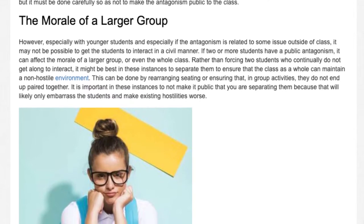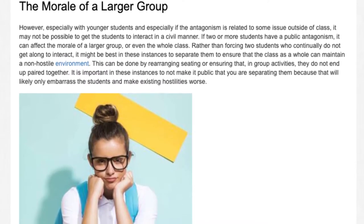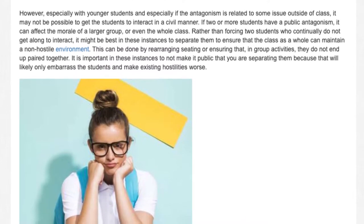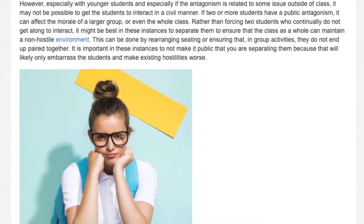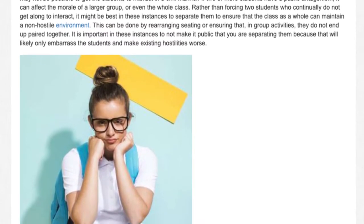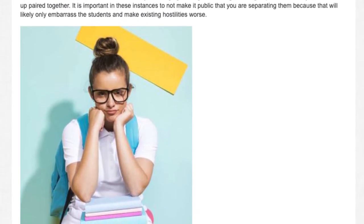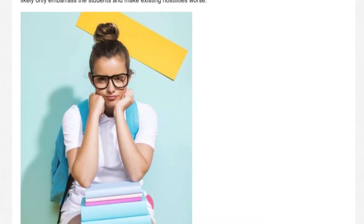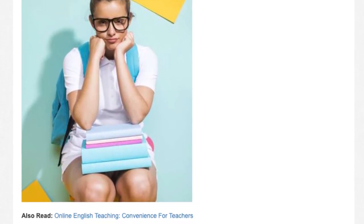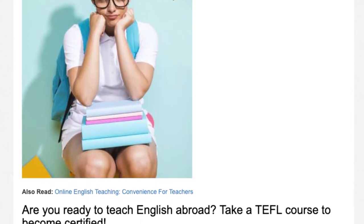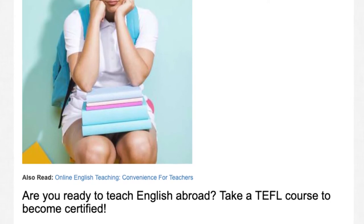However, especially with younger students and especially if the antagonism is related to some issue outside of class, it may not be possible to get the students to interact in a civil manner. If two or more students have a public antagonism, it can affect the morale of a larger group or even the whole class. Rather than forcing two students who continually do not get along to interact, it might be best in these instances to separate them to ensure that the class as a whole can maintain a non-hostile environment. This can be done by rearranging seating or ensuring that, in group activities, they do not end up paired together.